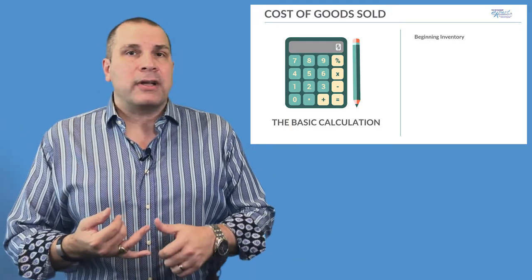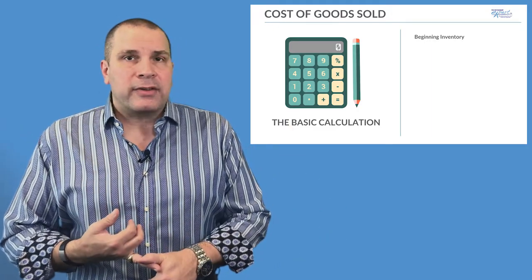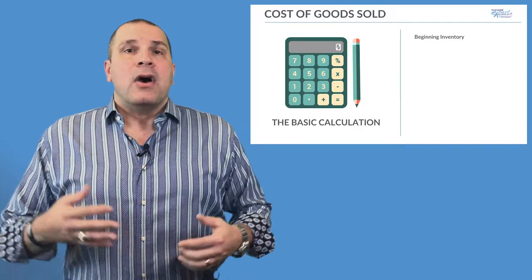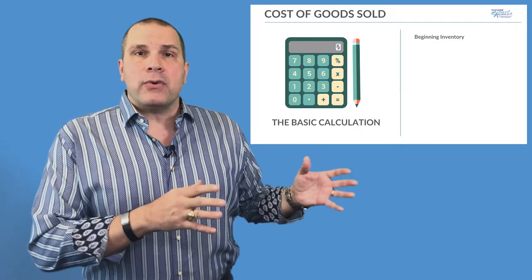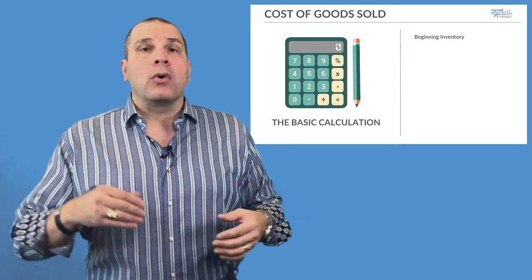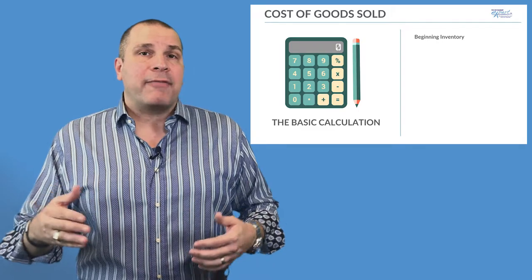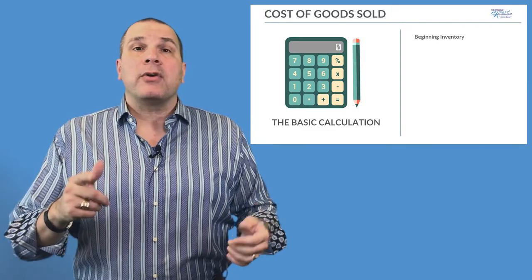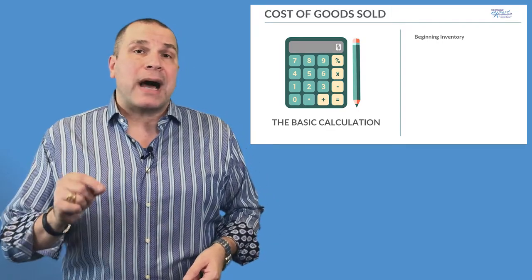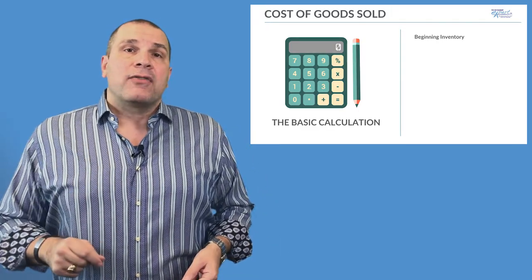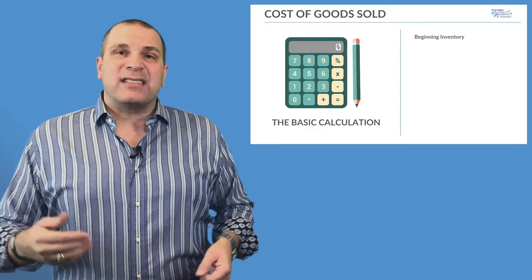By the way, paper supplies aren't a part of it. Janitorial's not a part of it. Smallwares not a part of it. Only the food, or only the liquor, bottle beer, draft beer, wine. We're going to do cost of goods sold by category — in this case, for cost of goods sold, let's just say food.